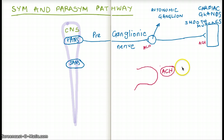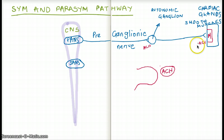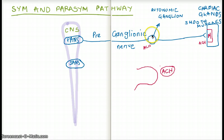The receptor on the end organ that the postganglionic nerve synapses with is called the muscarinic receptor, denoted by the letter M. Acetylcholine is the neurotransmitter binding to this muscarinic receptor. At the level of the autonomic ganglion, acetylcholine stimulates a receptor called the nicotinic receptor, denoted by the letter N.